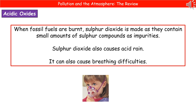The last pollutant we're going to look at is sulfur dioxide. When we burn fossil fuels, they contain small amounts of sulfur compounds as impurities, so when we burn the fossil fuel, the sulfur reacts with oxygen to make sulfur dioxide. When that sulfur dioxide travels up into the atmosphere, it will again dissolve in the clouds to make acid rain. Breathing in sulfur dioxide has also been linked to breathing difficulties.